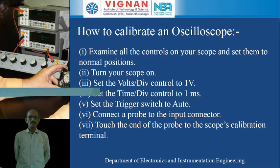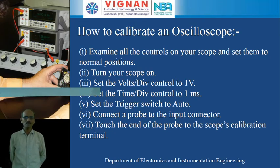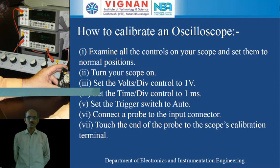First of all, examine all the controls on your scope and set them to normal position. We had seen different types of controls on the front panel like volts per division knob, times per division knob, x position, y position, intensity knob, and focus knob. You have to examine all the controls on the front panel of the oscilloscope and set them to normal position.